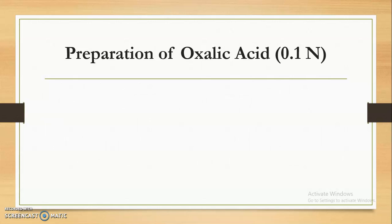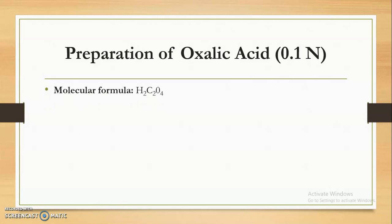Now, first we will see the preparation of oxalic acid, that is 0.1 normal. Here we will discuss in detail how to prepare the 0.1 normal solution of oxalic acid and how to carry out its standardization. The molecular formula of oxalic acid is H2C2O4. From the molecular formula, we can calculate the molecular weight. The molecular weight of oxalic acid is 90.03.